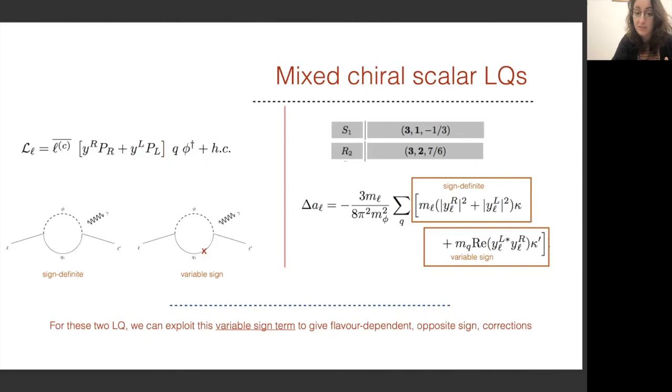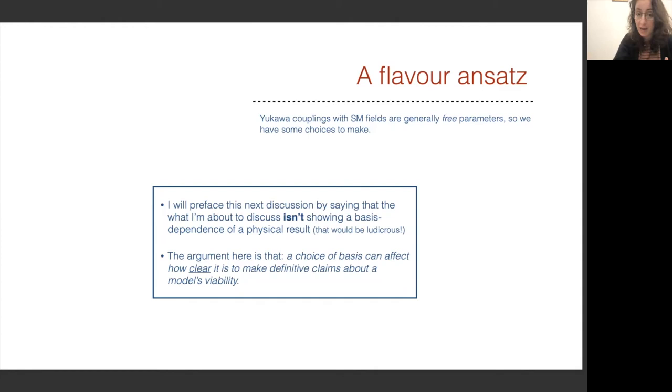For these two leptoquarks we can exploit the variable sign term to give flavor dependent opposite sign corrections to the g-2. And as I said, this is only true for S1 and R2, termed the mixed chiral scalar leptoquarks. Because the Yukawa couplings with standard model fields were generically free parameters, we have some choices to make. I'll preface the next discussion by saying that what I'm about to discuss isn't showing that there's a basis dependence of a physical result. The argument I'm trying to make is that the choice of basis can affect how clear it is to make a definitive claim about the viability of a model.